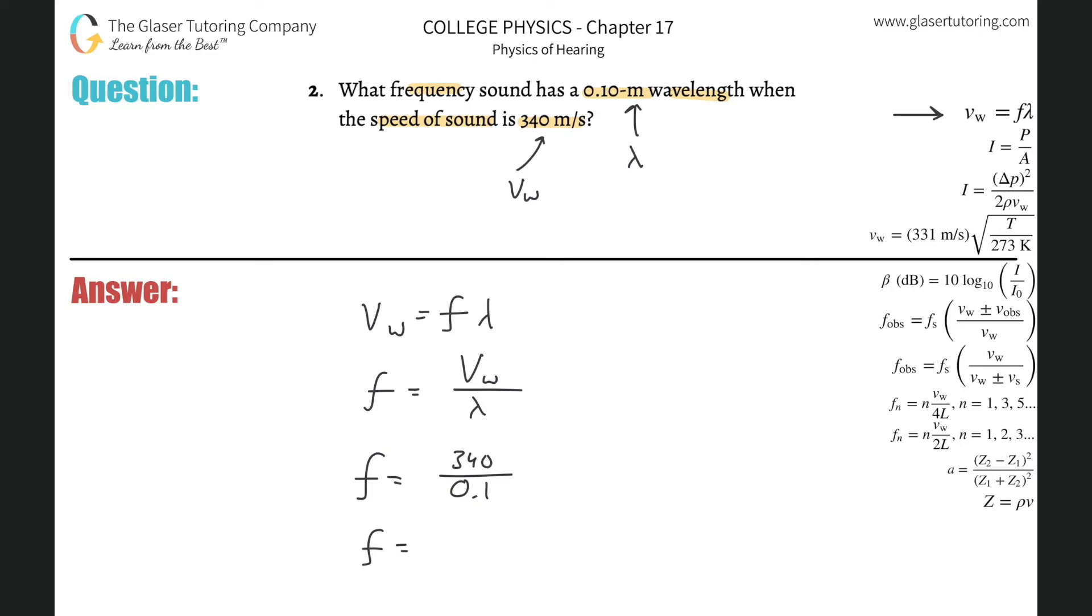So 340 divided by 0.1 is simply going to be 3,400. I guess two sig figs, so 3.4 times 10 to the third, and that's in seconds minus one. You can write it as one over second, or you can write it as hertz. They all mean the same thing.